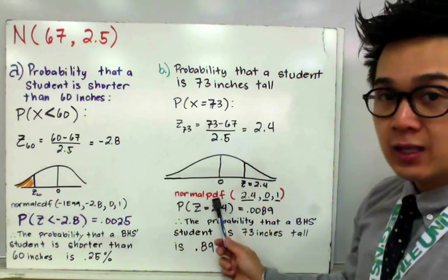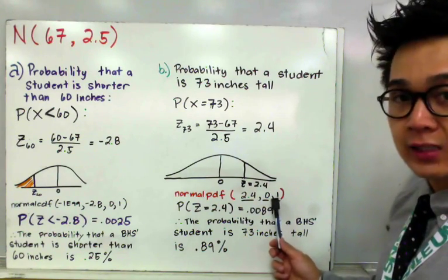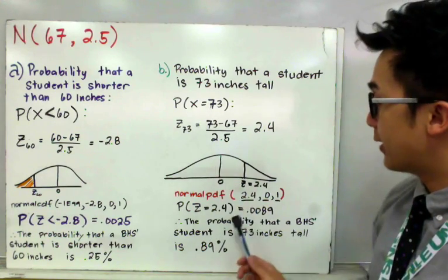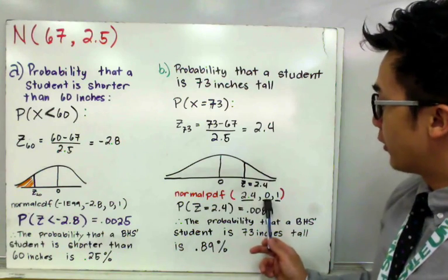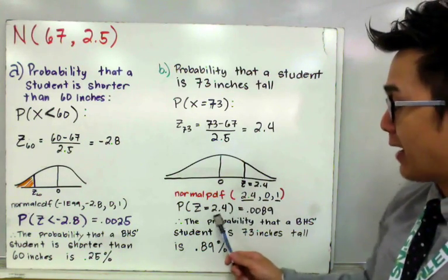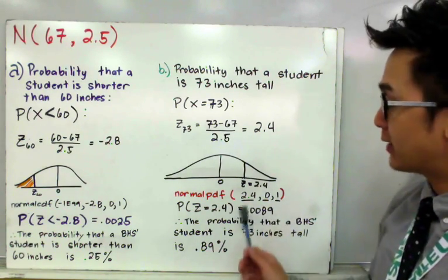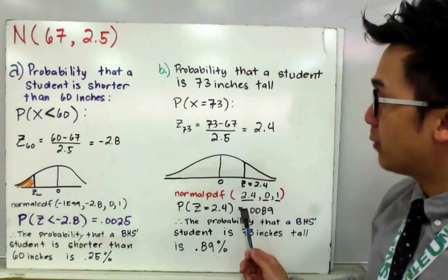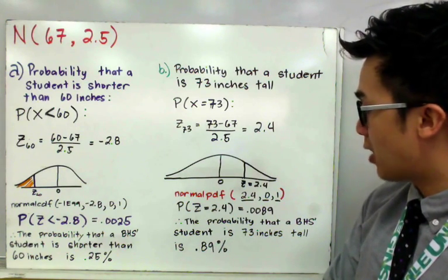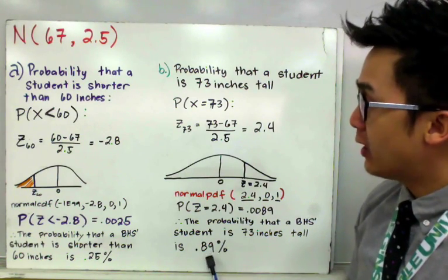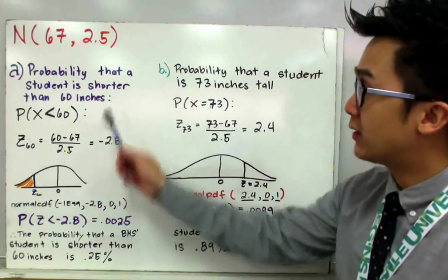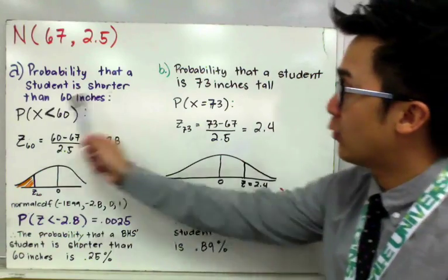The syntax for normalPDF is the Z-score, the mean, and the standard deviation — that is the difference from the syntax used in letter A. So we enter Z-score of 2.4, mean of 0, and standard deviation of 1. When you hit enter, the TI-84 gives a value of 0.0089. Therefore, the probability that a Barstow High School student is exactly 73 inches tall is 0.89%, which is slightly higher than letter A but still less than 1%.